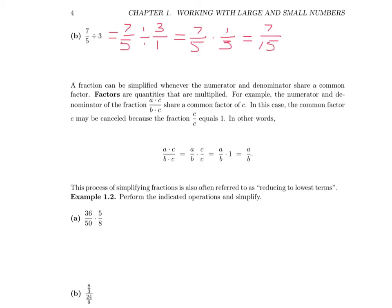If I take the fraction A times C divided by B times C, I can use multiplication to rewrite it as two fractions that are multiplied. When I do this, I'm separating out the fraction C over C, which equals 1. So really what we're doing is taking the fraction A over B and multiplying it by 1, which of course is A over B. Therefore this fraction simplifies down to A over B. This process of simplifying fractions by eliminating all factors common to the numerator and denominator is often referred to as reducing to lowest terms.